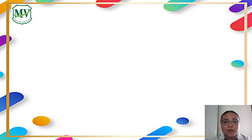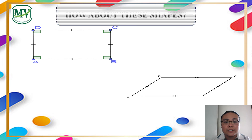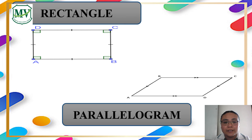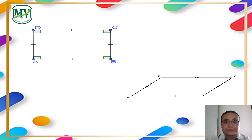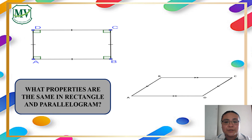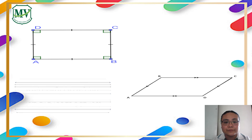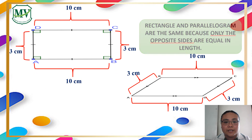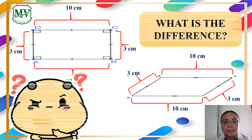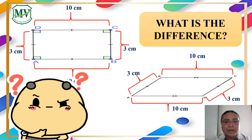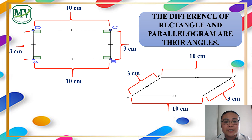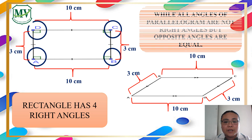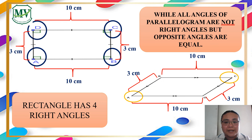Let us try another one. How about these shapes? It is a rectangle and a parallelogram. What properties are the same? Rectangle and parallelogram are the same because only the opposite sides are equal in length. What is the difference? The difference is their angles: a rectangle has four right angles, while the angles of the parallelogram are not right angles.